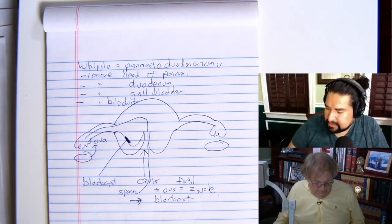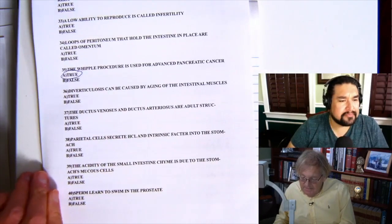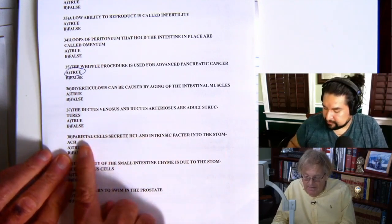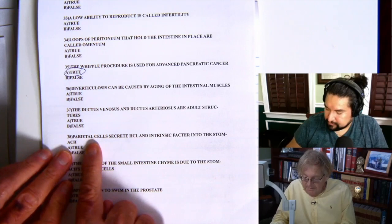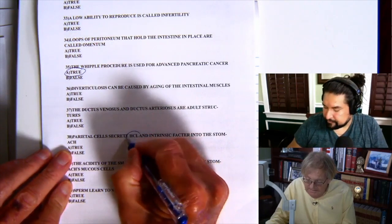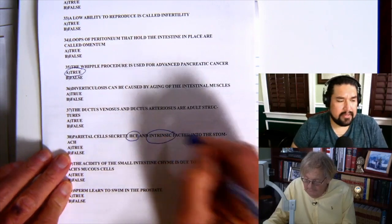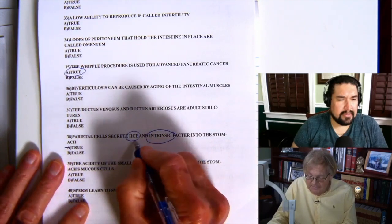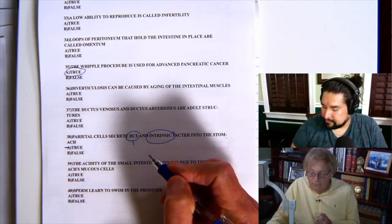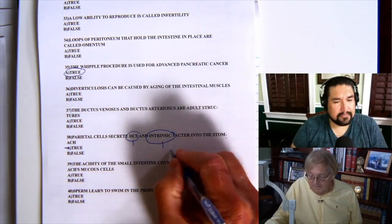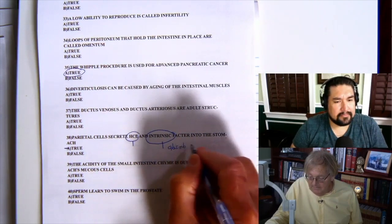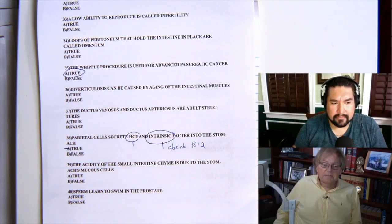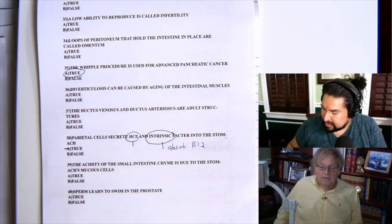Number 38 says parietal cells secrete hydrochloric acid and intrinsic factor into the stomach. Parietal cells are found in the stomach; they do secrete hydrochloric acid to break down food, and they do secrete intrinsic factor, which is used to absorb vitamin B12. So that statement is true.